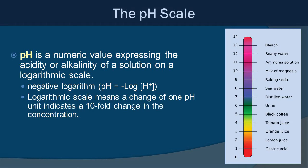So defining pH: it is a numeric value expressing the acidity or alkalinity of a solution on a logarithmic scale — in fact, a negative logarithmic scale. pH equals the negative log of the concentration of hydrogen ions. Essentially, a change of one pH unit indicates a tenfold change in concentration, so there's a very big difference between, for example, a pH of 8 and 9, or 5 and 4.